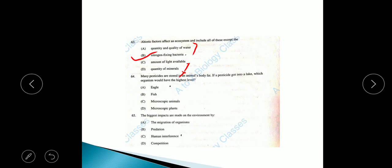Question 64: Many pesticides are stored in an animal's body fat. If a pesticide got into a lake, which organism would have the highest level? The answer will be option A, eagle. It is a question of biomagnification concept. Question 65: The biggest impacts are made on the environment by option C, human interference.